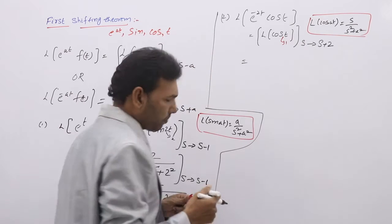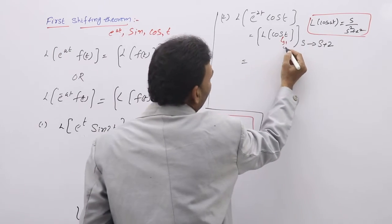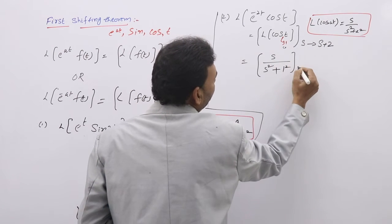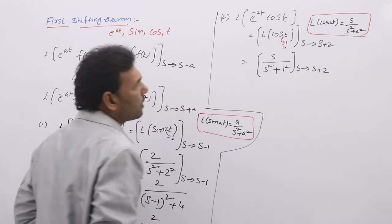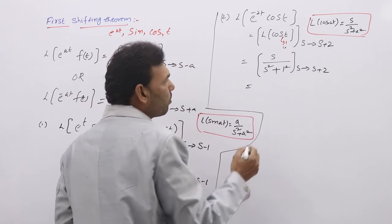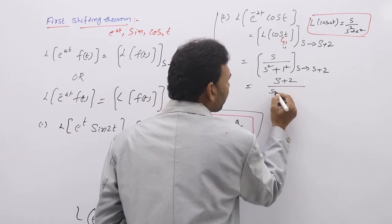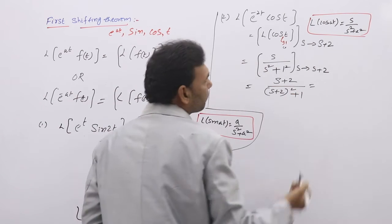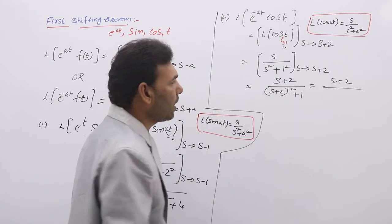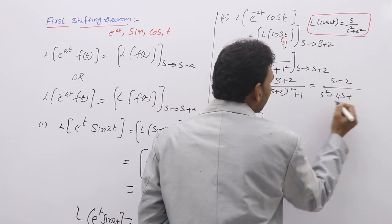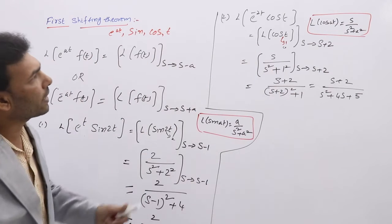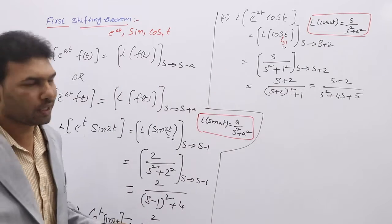Here a = 1, so L{cos(t)} = s / (s² + 1). Now replace s by s plus 2 everywhere: L{e^(-2t) · cos(t)} = (s+2) / ((s+2)² + 1). Expanding using (a+b)² = a² + 2ab + b²: (s+2)² + 1 = s² + 4s + 4 + 1 = s² + 4s + 5.